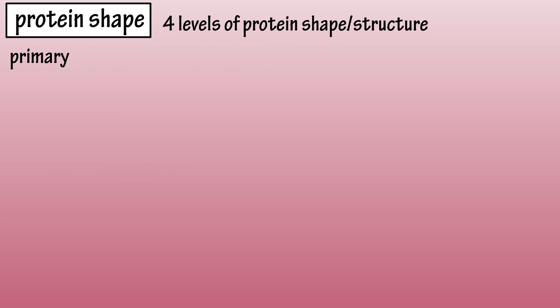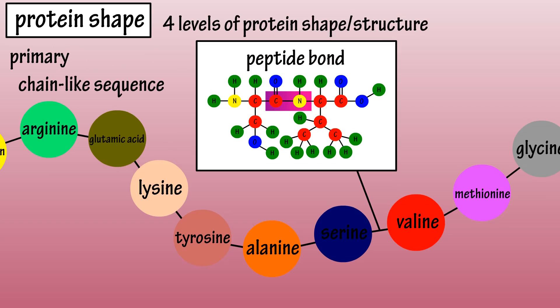The primary or first level of protein structure is a chain-like or linear sequence of amino acids joined by peptide bonds.